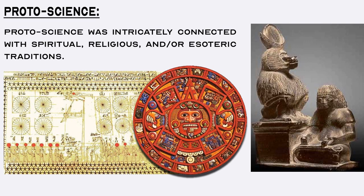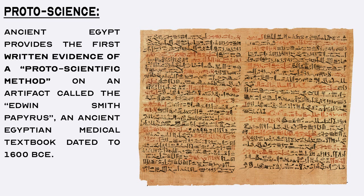Ancient Egypt provides clear examples of this paradigm, with architects, physicians, blacksmiths, and mathematicians all being referred to as priests in the historical literature, each profession having an association with a unique deity in the ancient Egyptian religion. In particular, ancient Egypt provides the first written evidence of steps that resemble the modern scientific method on an artifact called the Edwin Smith Papyrus, an ancient Egyptian medical textbook dated to around 1600 BC. This papyrus outlines the steps of examination, diagnosis, treatment, and prognosis, which mirror the steps of the modern scientific method of observation, speculative hypothesis, experimentation, and explanatory theory.